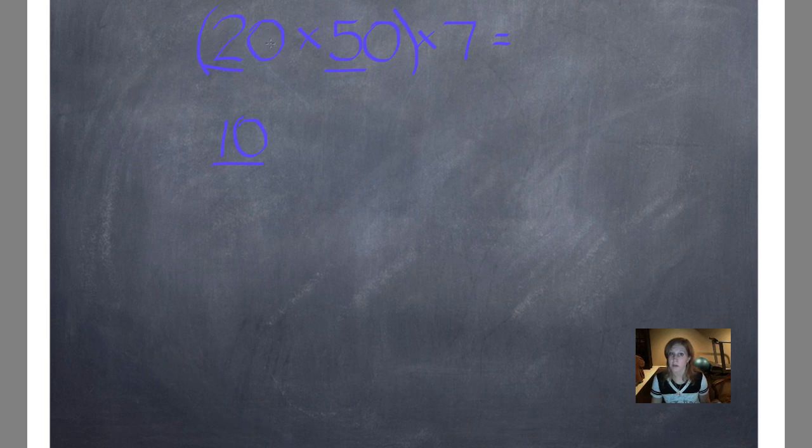After I'm done doing that, I count the zeros in both of my factors. There's 1 here and 1 here. So I add 2 zeros, 1, 2, after that 10. Do you see how easy it could be to make a mistake there? That's why I underlined my original product. Now I've multiplied 20 times 50.